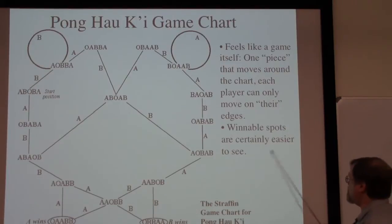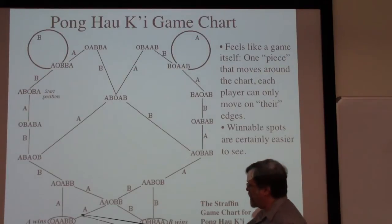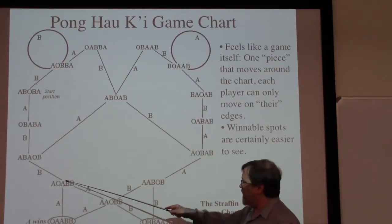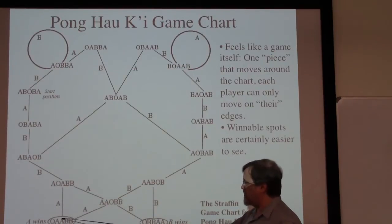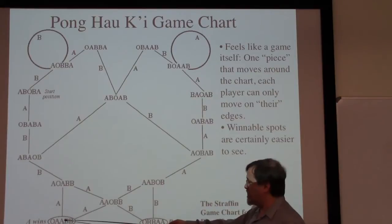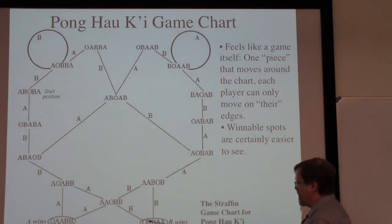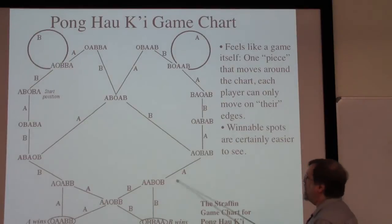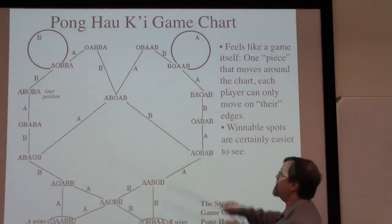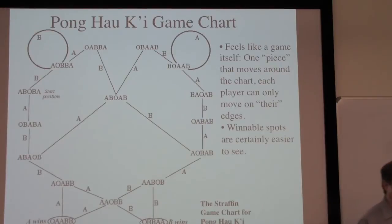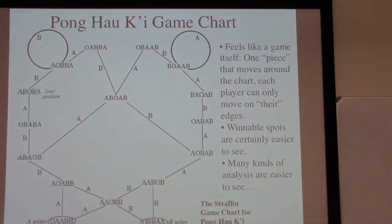For example, winning spots are certainly easier to see. Notice that this is a win for A — A has ways to get to that. But once we get to this position, B has no moves to get out of there, so we're stuck. B obviously has no options, no moves, and A has one. Similarly, if B were to get over to this position, A has no moves from there. But every other position, it's easily seen that A and B both have moves from that particular position. Many other kinds of analysis are easier to see as well, and we'll take a look at how we use these game charts to analyze some games.